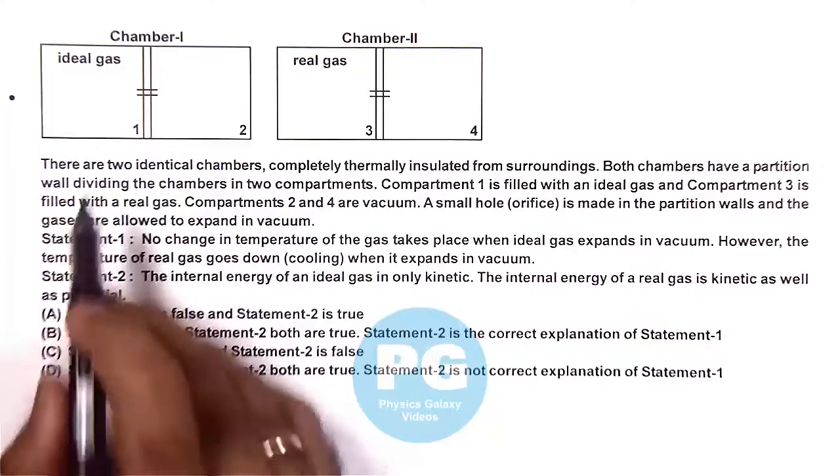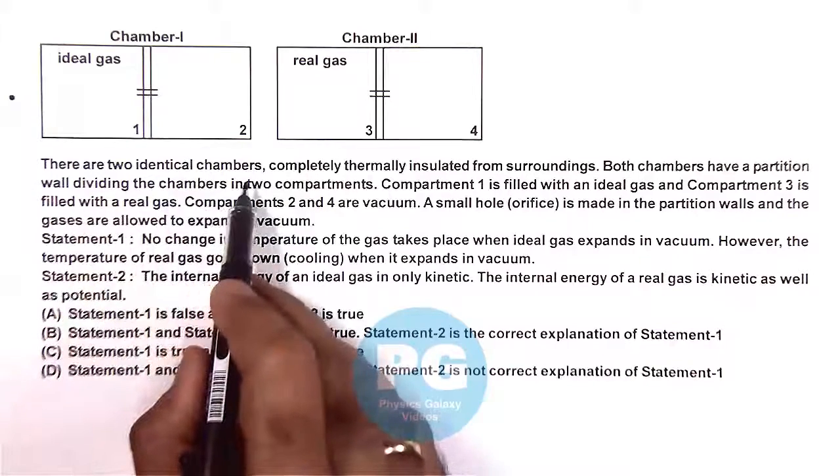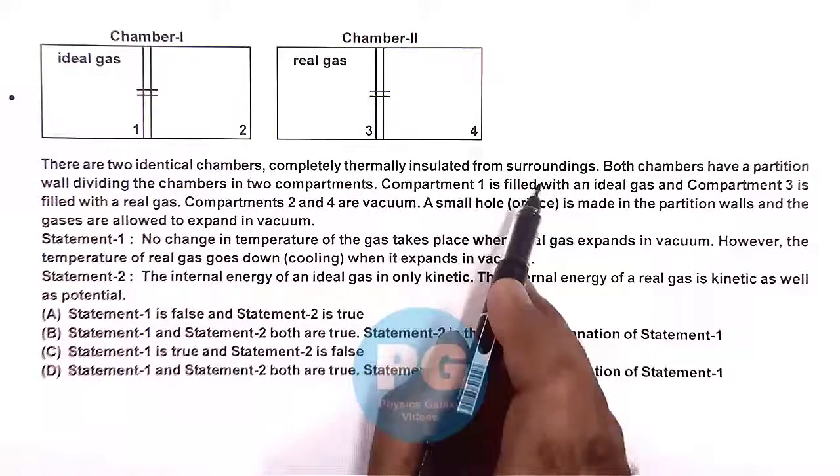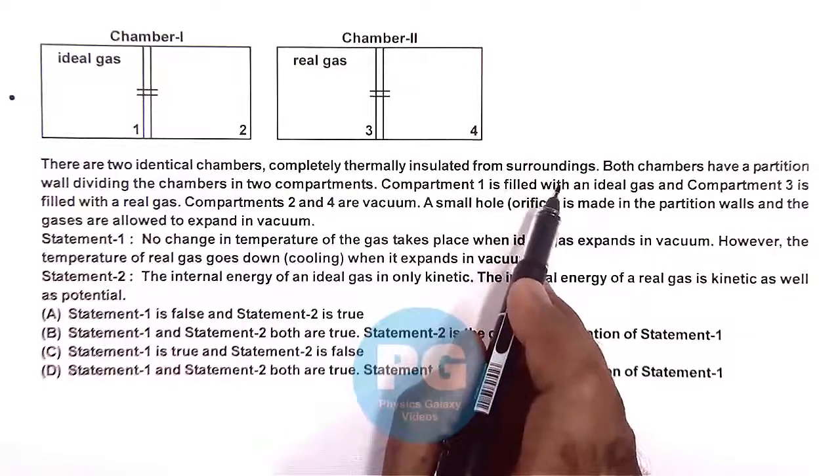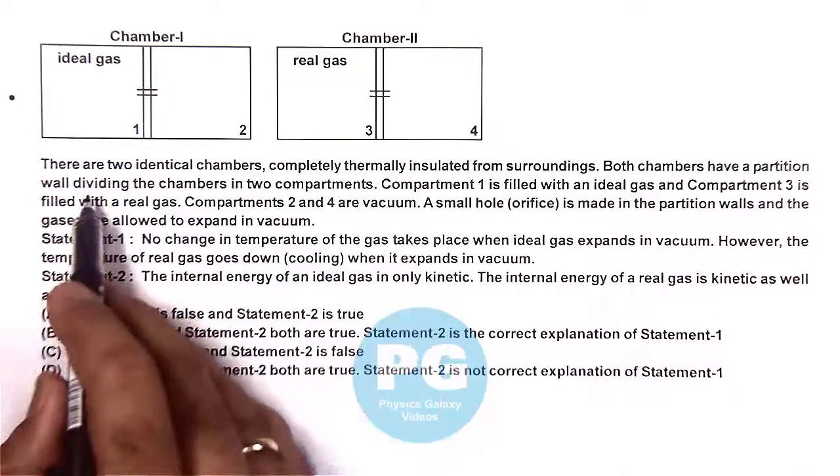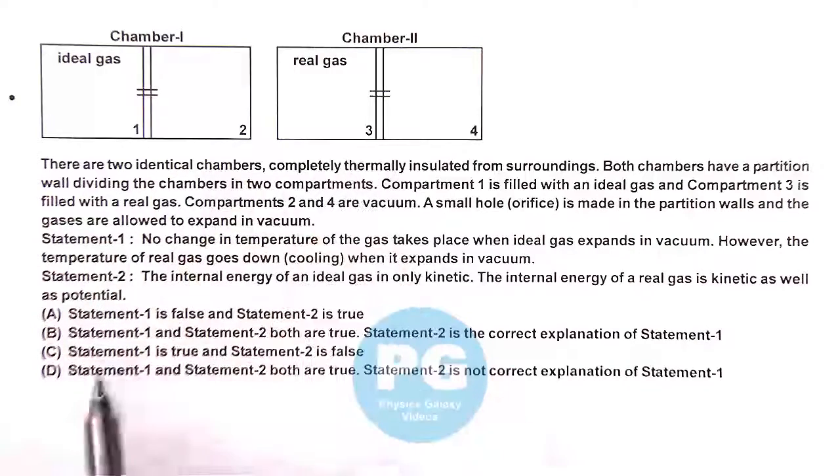In this question, we are given that there are two identical chambers, completely thermally insulated from surrounding. Both chambers have a partition wall, dividing the chambers in two compartments.